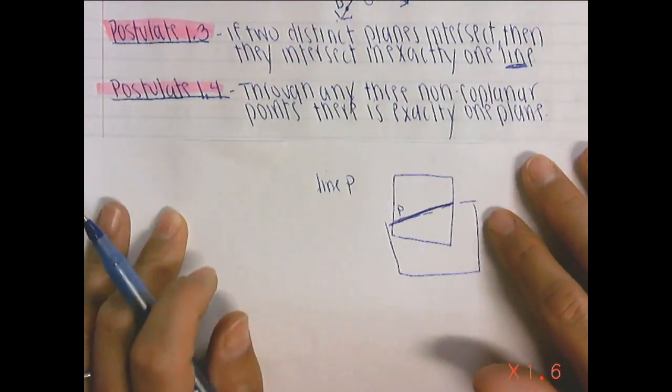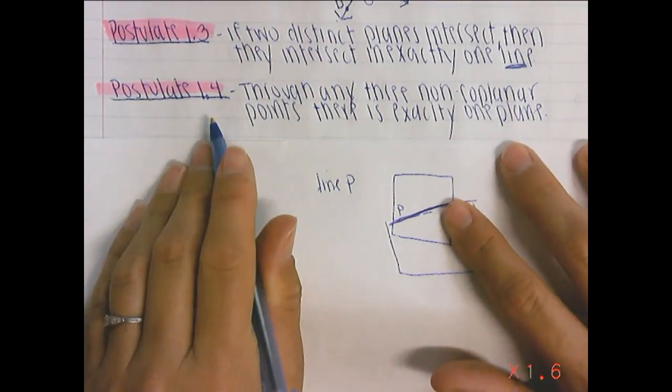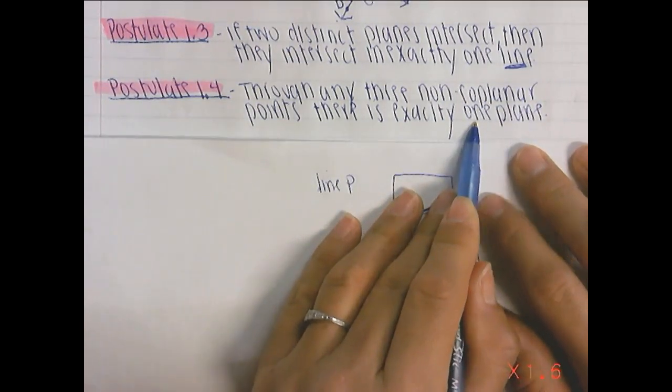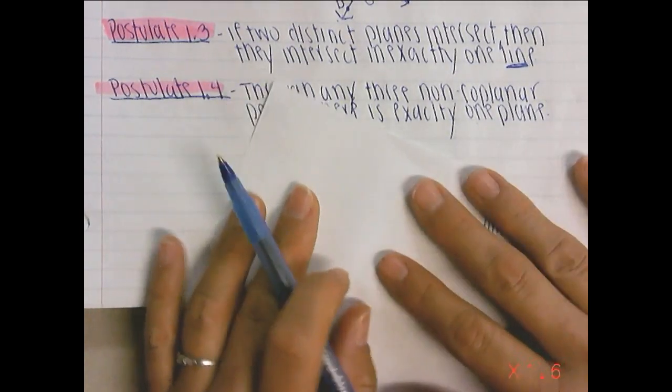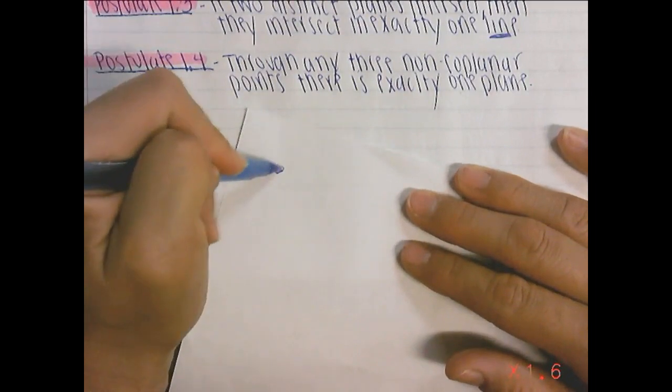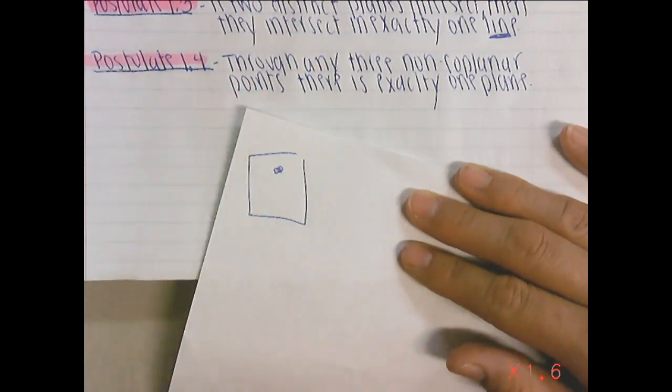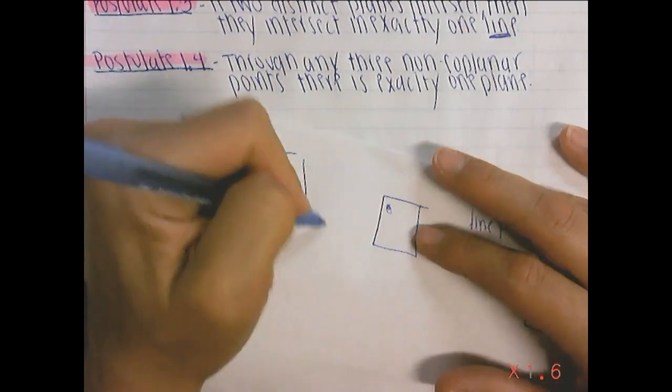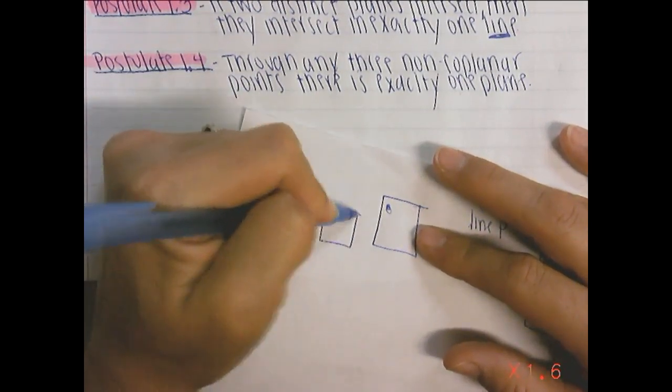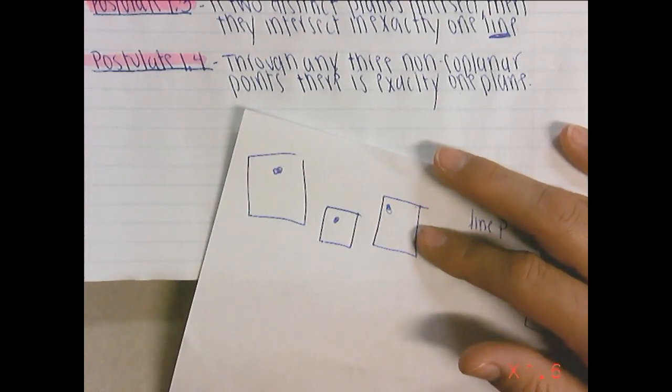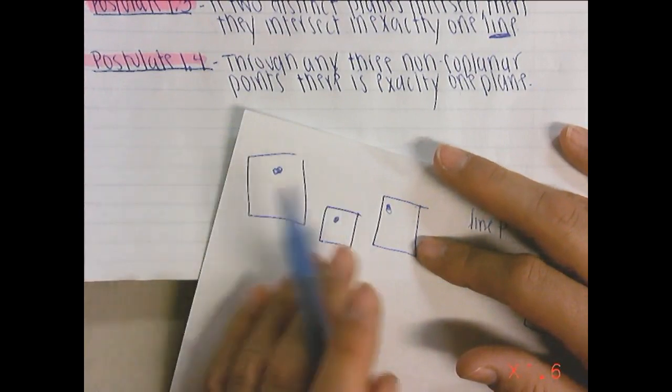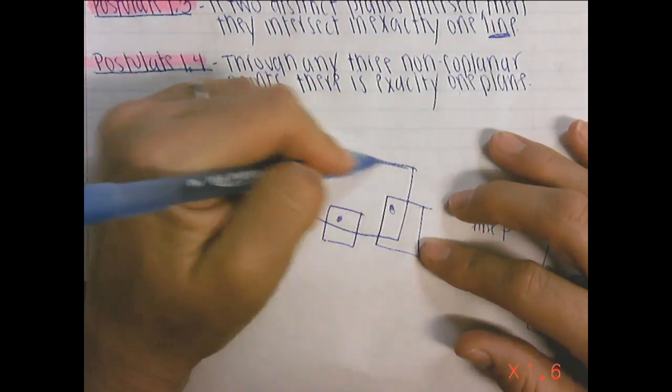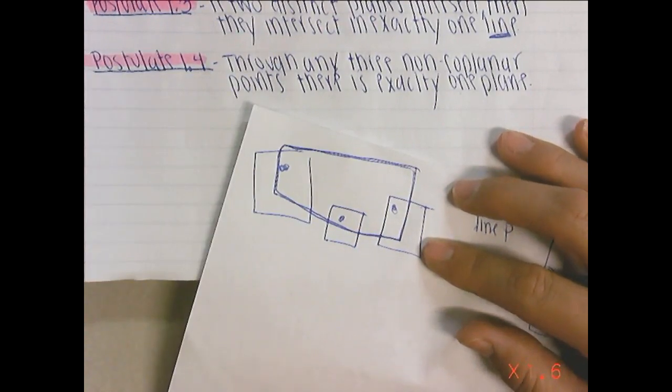And then the last thing that we have to talk about today is postulate 1.4. Through any three non-coplanar points, there is exactly one plane. So let's say over here, through any three non-coplanar points, there is exactly one plane. We have that point on a plane. We have this point on a plane. And we have this point on a plane. So they're non-coplanar. What postulate 1.4 says, through any of these non-coplanar points, you can identify a plane. So this would be our new plane that we just identified with those three points.